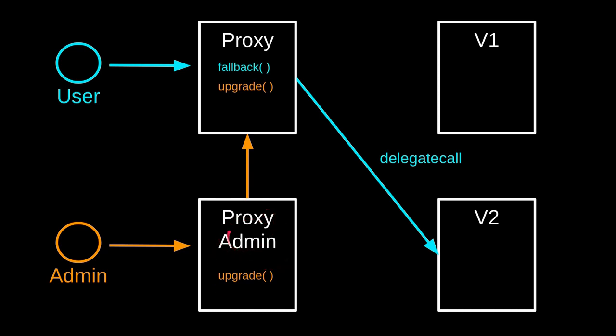The proxy admin will serve as an admin to the proxy contract. So if we are the admin of the proxy admin, we will be able to call the function upgrade inside the proxy admin, and this will forward the function call over to the proxy contract. This is done for a security reason which I will not discuss in this video — I'll put a link in the description below.